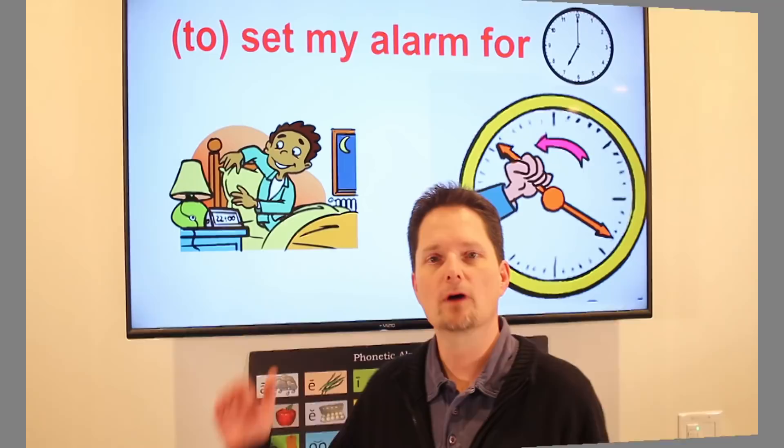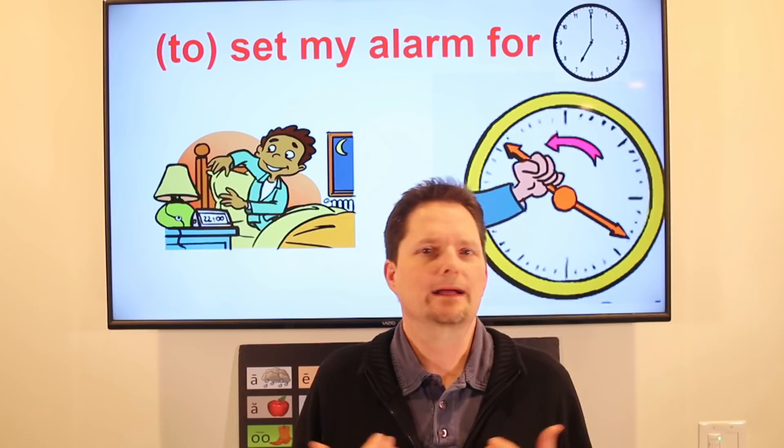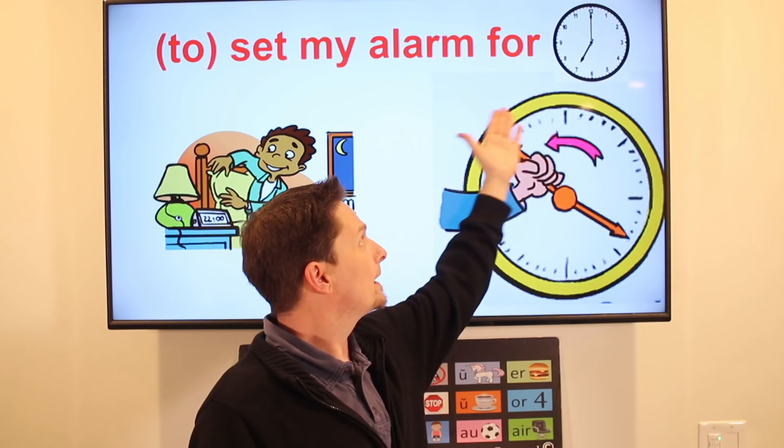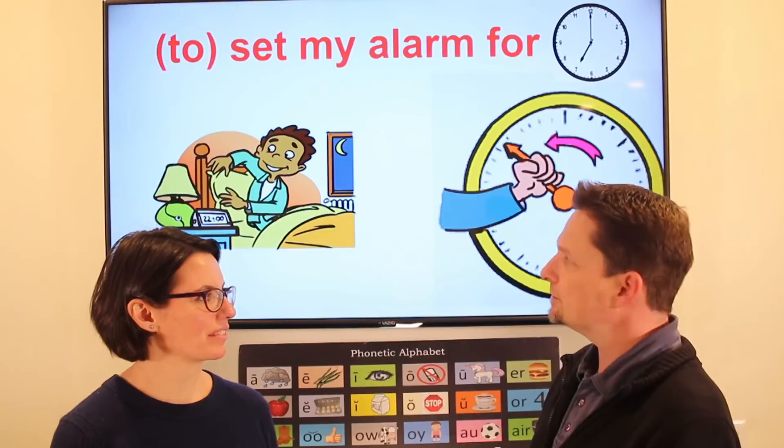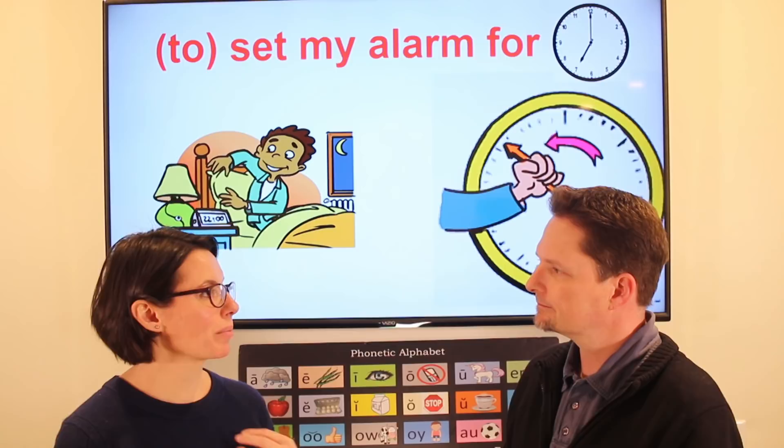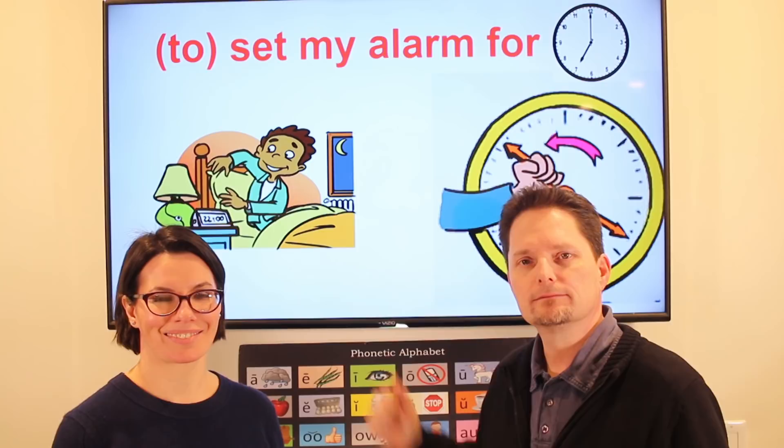After I get in bed, I need to set my alarm to wake up in the morning — I cannot wake up on my own. I set my alarm for 7 to wake up in the morning. What do you do when you get in bed? When I get in bed, I set my alarm. What time do you set your alarm for? I set my alarm for 7.